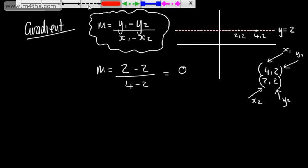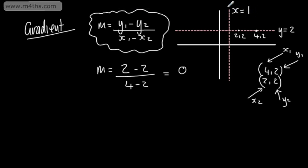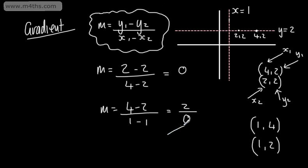If we have a vertical line — let's say x is equal to 1 — we say that the gradient is undefined, or we have an infinite gradient. If we chose points (1, 4) and (1, 2), you can see there's no change in the x coordinate. The change in y is 4 minus 2, over the change in x which is 1 minus 1. That gives us 2 in the numerator but 0 in the denominator. When we have 0 in the denominator, that is undefined — so we say the gradient of a vertical line is infinite.